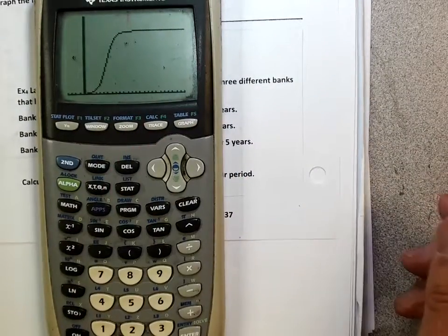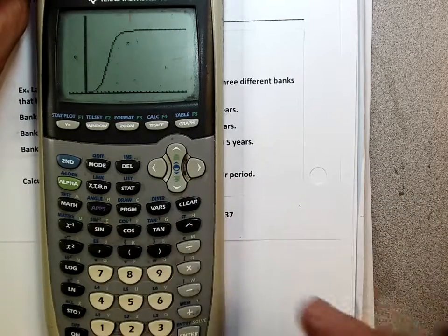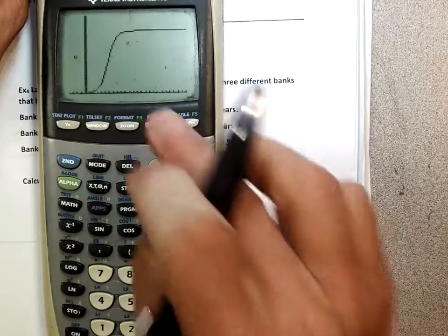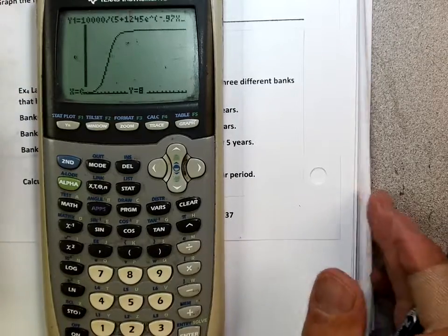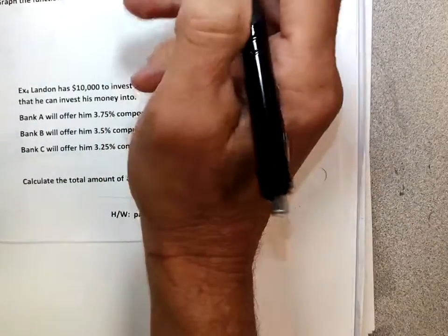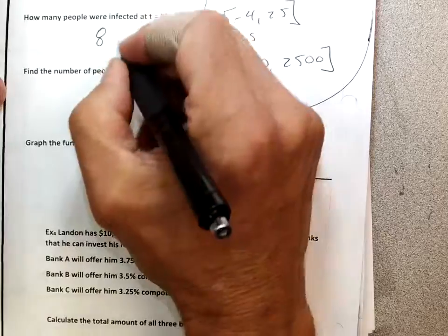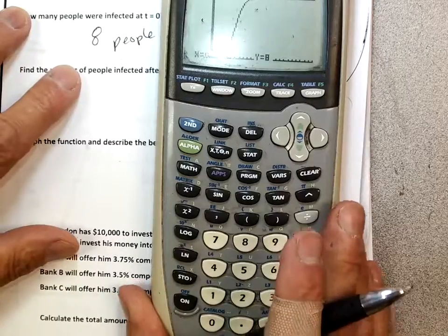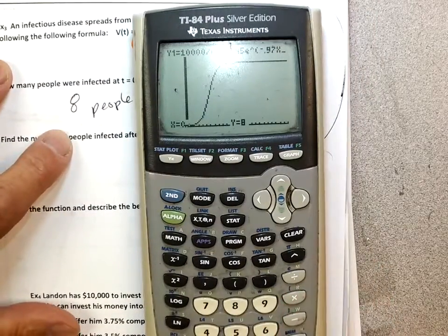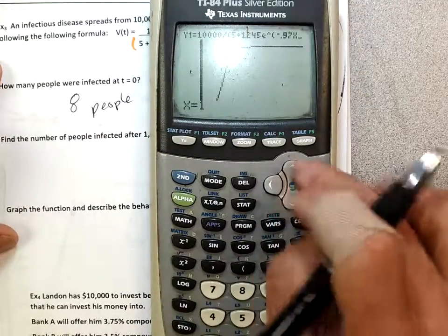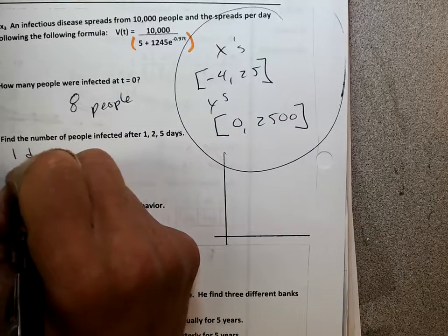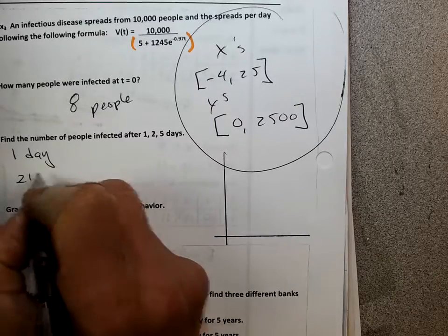Find the number of people affected in one day. How can I do that one day? How about how many people affected at t equals 0? Let's go trace. Trace. Zero. Eight people. Ryan, you got the eight right. Eight people were affected. So, what happened is eight people came to school sick and got us all sick. Eight people came to school. How did I get that? I just used my trace button. How about 1? Trace. 1. Enter. About 21 people. So, after one day, I've got 21 people.